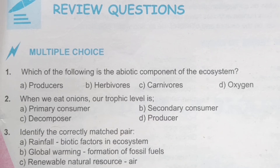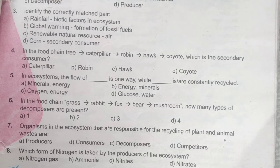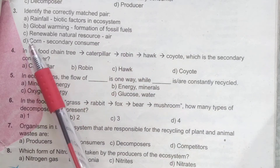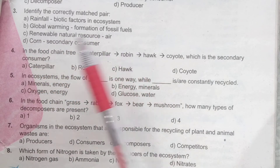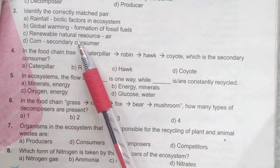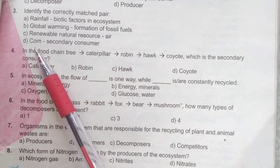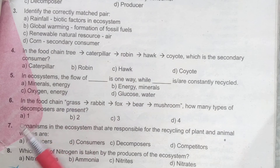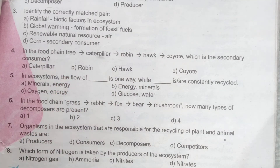Third statement is: identify the correctly matched pairs. A option: rainfall — biotic factors in ecosystem. B option: global warming — formation of fossil fuels. C option: renewable natural resources. And D option: corn — secondary consumers. The correct option of this statement is C, renewable natural resources.